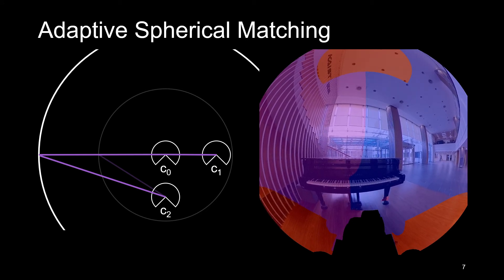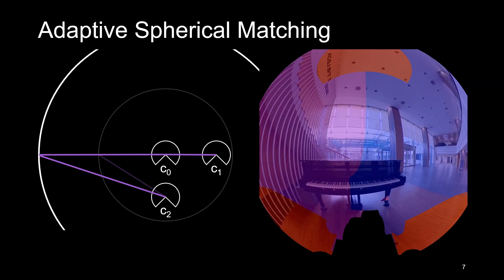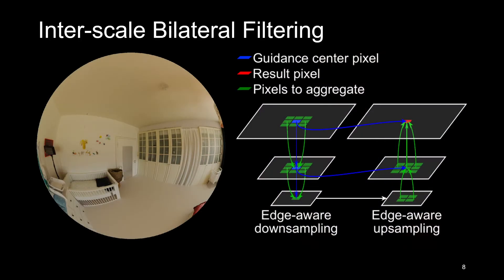We then compute the cost volume, which evaluates the matching quality between the sweeping volume and the reference image. Since the raw cost volume is noisy, cost aggregation is required. However, existing edge-preserving methods are too computationally expensive for our low-power hardware.